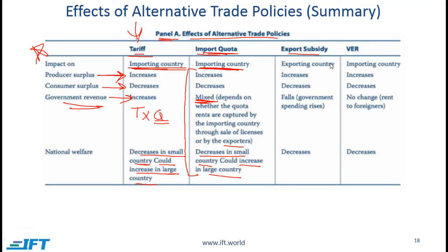Export subsidy impacts the exporting country. The producer surplus increases, consumer surplus decreases, and government revenue falls because a subsidy is effectively a negative tax — government spending rises and national welfare decreases.